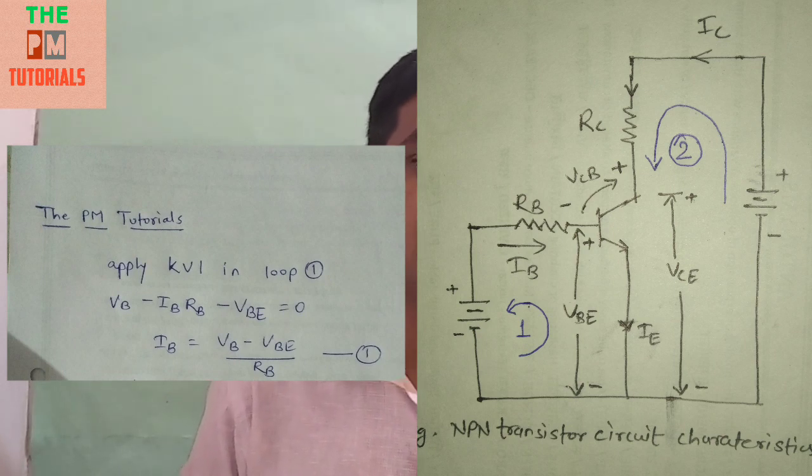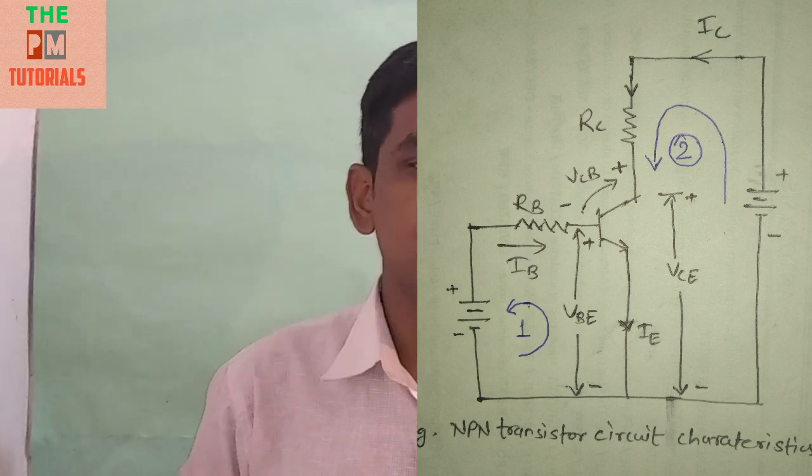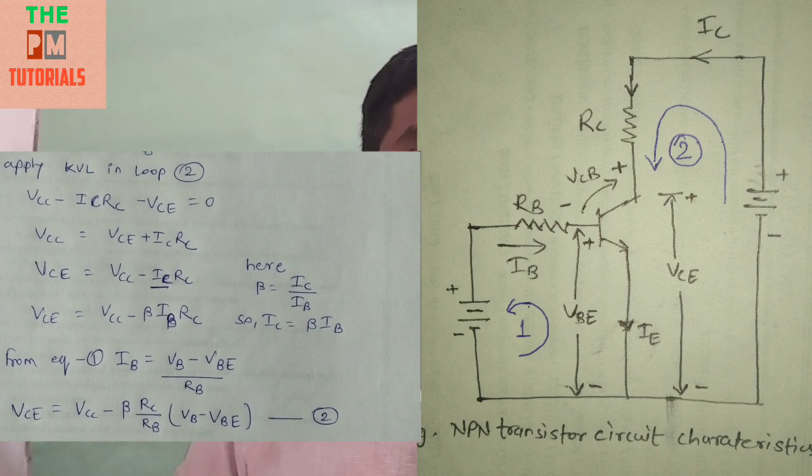Apply KVL in loop 2. In this loop 2 we can derive the equation like VCC minus IC*RC minus VCE voltage across the NPN transistor is equal to 0. Here by arranging the equation we can derive: VCE is equal to VCC minus IC*RC.